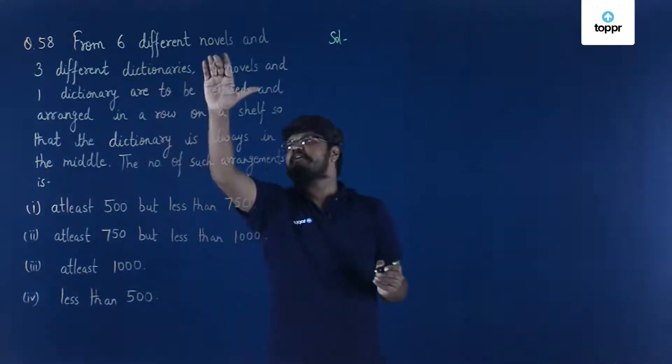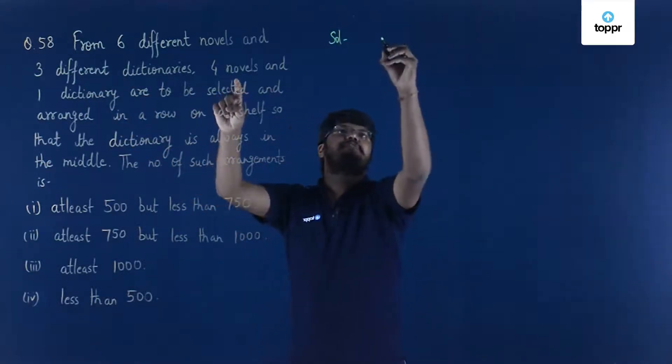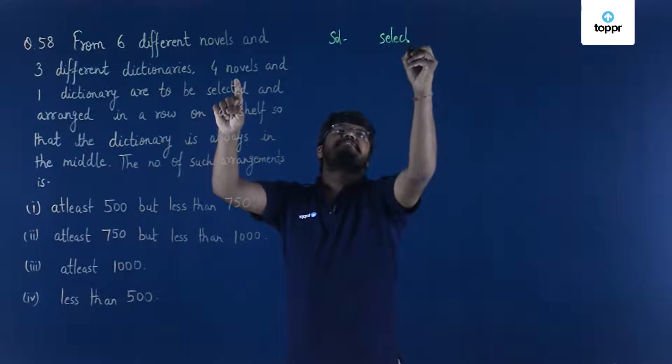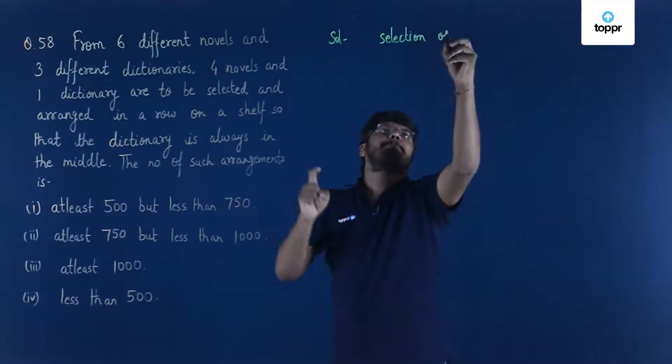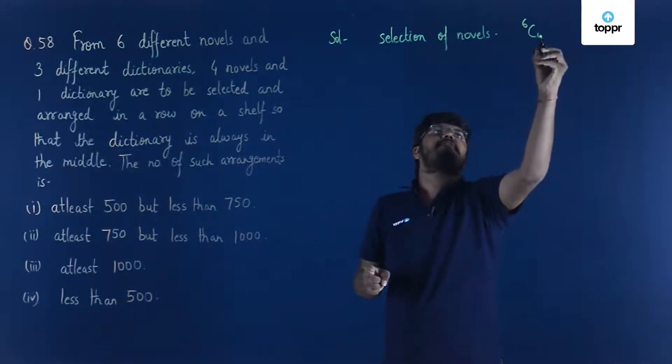Since we have six different novels and since we have to be selecting four novels from it, so let's first start with selection of novels. It's quite simple, right? From six we have to select four, so 6C4.